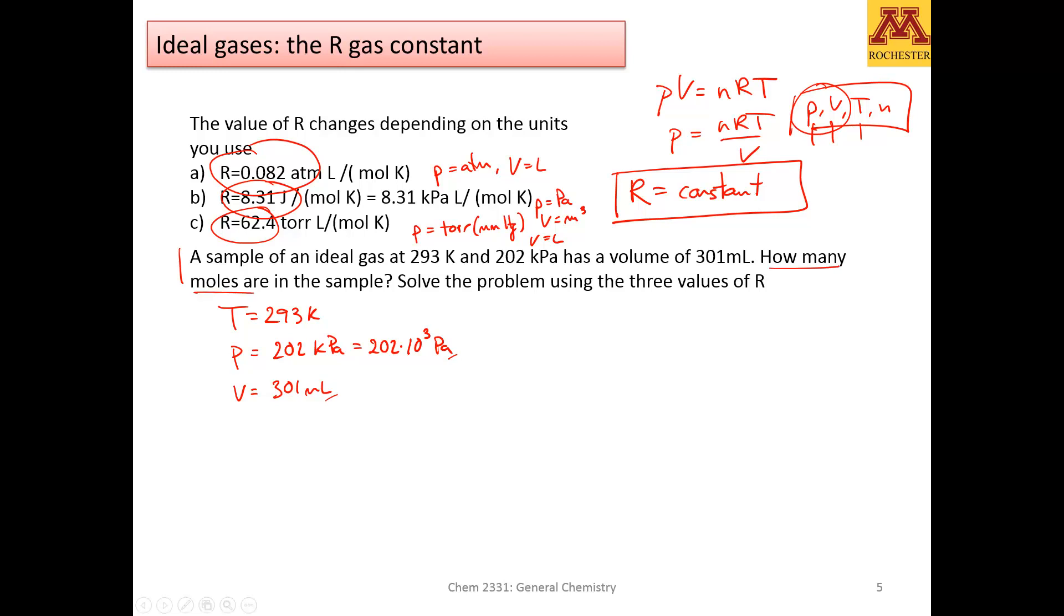We said that PV equals nRT contains four variables. So if you're given three—temperature, pressure, and volume—it means that the fourth variable can be found. If I put n on one side of the equal, it's easy to see: PV divided by RT.